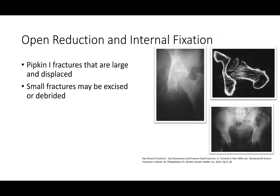Open reduction internal fixation of femoral heads can be done for a Pipkin 1 fracture that is large and displaced, because small fractures can be excised or debrided. Looking at the fragment size and position — for example, if it's not anywhere close to reduced and it's backwards — this can be treated with open reduction internal fixation, shown here with two compression screws. A lot of times these are going to be headless screws or certainly countersunk screws.